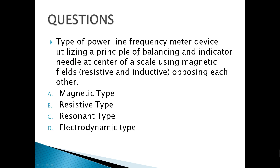The keywords are: frequency meter device and magnetic fields. We can choose letter A — the magnetic type. That's correct.